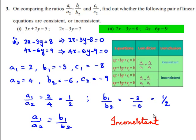Therefore, the equations 2x minus 3y equals 8 and 4x minus 6y equals 9 are inconsistent.